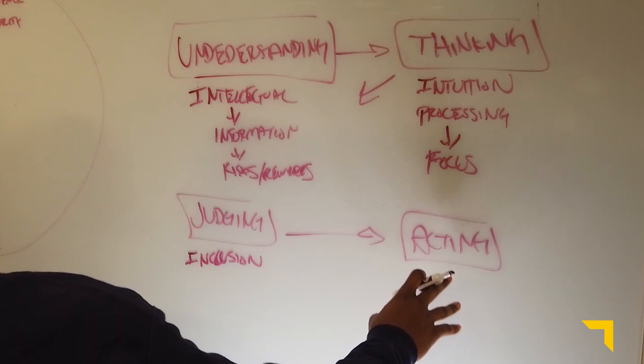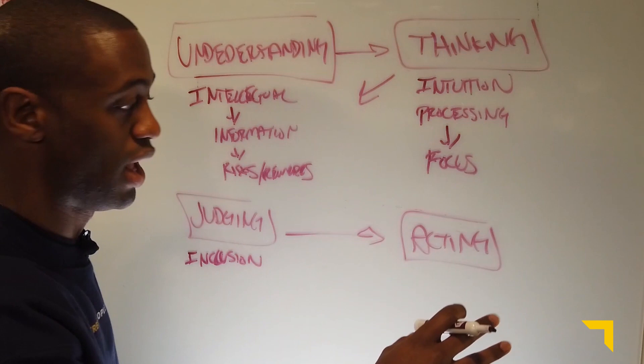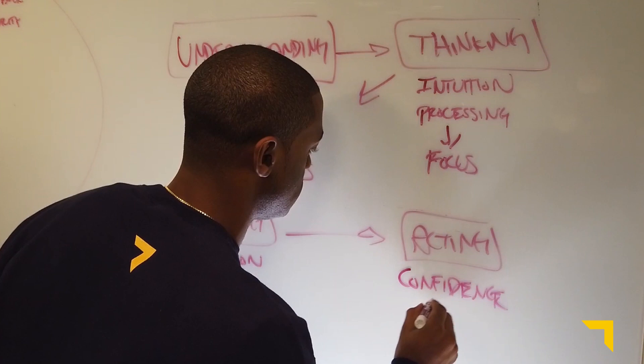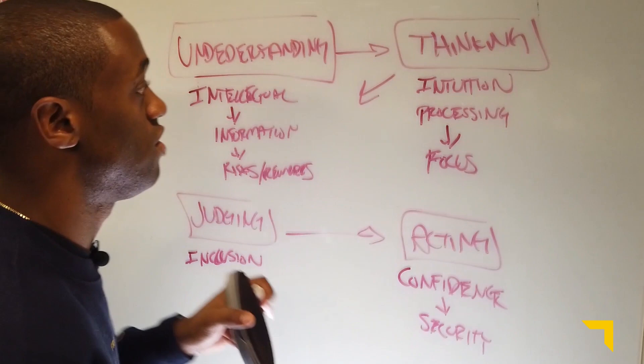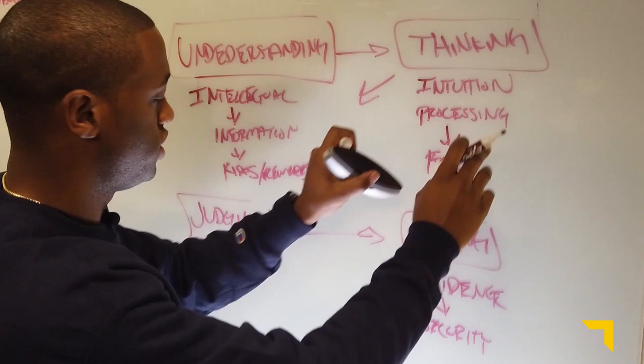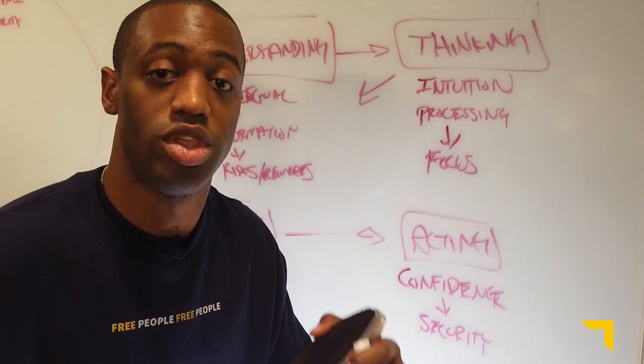And then judging leads to acting and acting is ultimately all about confidence and security. So if you follow this process, then you won't ever second guess yourself or you shouldn't second guess yourself. Obviously we're human. So sometimes that happens, but you follow the process of understanding, thinking, judging, acting, balancing your intellect, your intuition, your inclusion, and then your confidence and security.